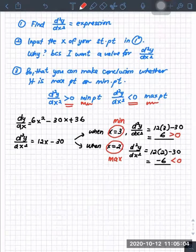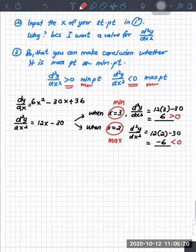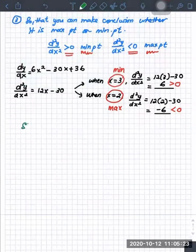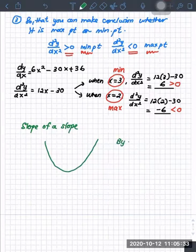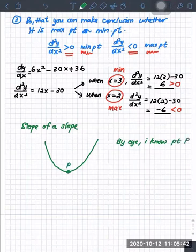How do you know the rule works like that? You cannot just accept the fact — let me explain further. Put your pen down, it's story time. What are we doing? We are doing slope of a slope. I am going to literally draw a minimum curve for you. This is a minimum point P.